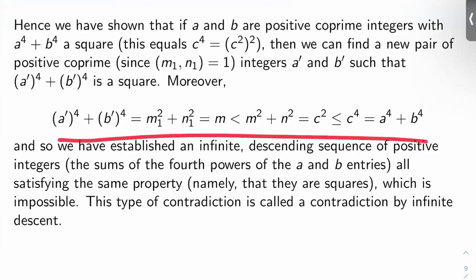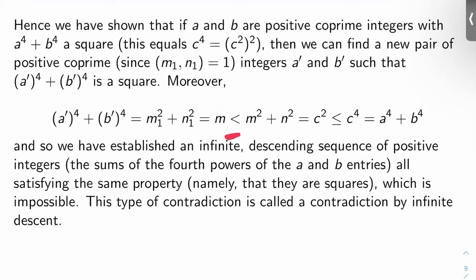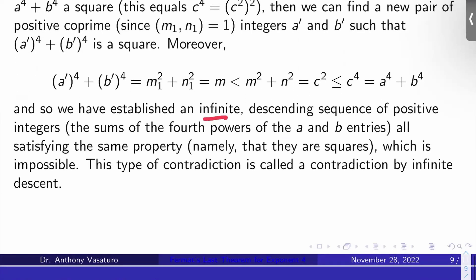Why does this matter? The key is that a'⁴ + b'⁴ equals m1² + n1², which equals m. But m is a positive integer strictly less than m² + n² (since n is also a positive integer), and m² + n² = c², which is less than or equal to c⁴ = a⁴ + b⁴. So a'⁴ + b'⁴ is strictly less than a⁴ + b⁴. Now you can start the procedure all over again with your new solution, but that establishes an infinite strictly descending sequence of positive integers. You can't have a strictly decreasing infinite sequence of positive integers — so that's a contradiction. This type of contradiction is called contradiction by infinite descent.